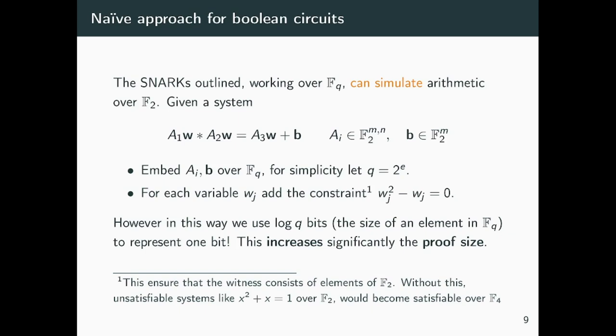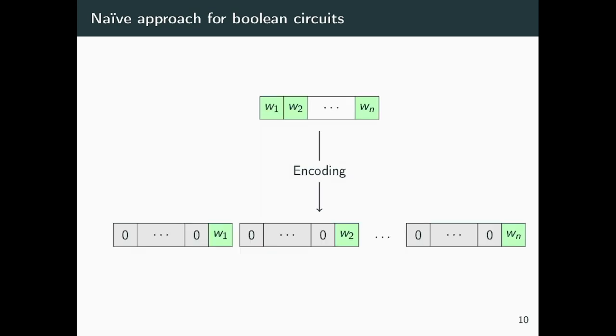However, this approach introduces significant inefficiencies. Just to provide a visual example, given a witness that consists only of bits, for instance n bits, by encoding this witness into the larger field, we are essentially using a whole field element just to represent one bit. In several cases, for instance Aurora or Ligero++, all these field elements have the size of the security parameter, meaning that our witness is increasing by a factor of 128. This clearly increases the proof size.